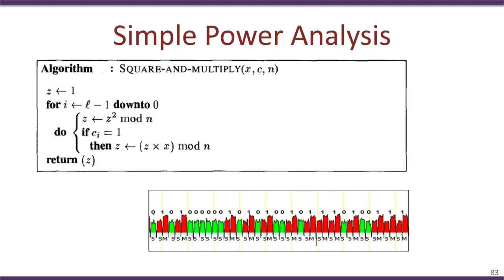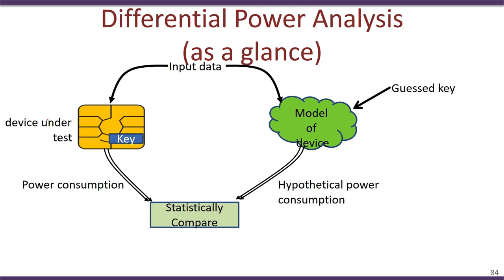This is obviously a very simple attack, and over the years people have developed much stronger implementations of such algorithms, so simple power attacks like this are not very applicable in modern-day devices, since most modern cryptographic devices do not use algorithms where the power leakage is this obvious. A much more powerful attack is known as Differential Power Analysis (DPA). The main concept here — unlike SPA — is to collect a large number of power traces and then perform statistical analysis on them to deduce the key.